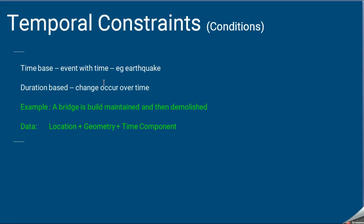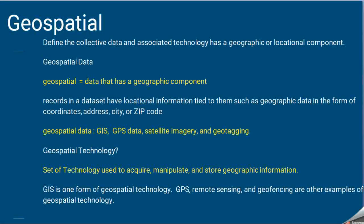Temporal constraints refer to the time-based component of GIS. For example, when storing a bridge, we store not only its location coordinates and geometry but also its time component — what changes occurred over time. These things also need to be maintained when storing GIS data, since it is geospatial data with a geographical component.